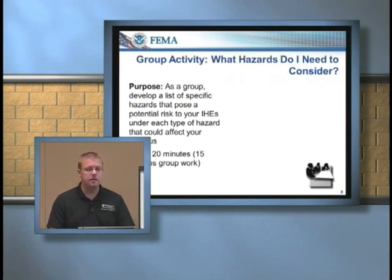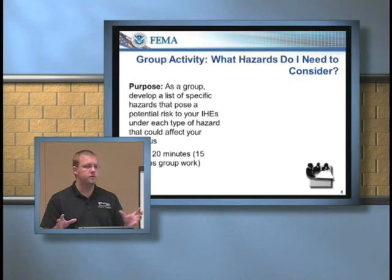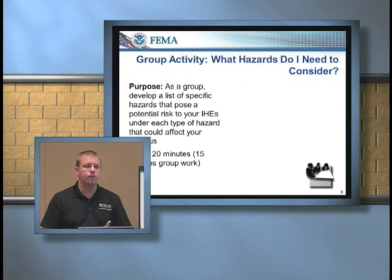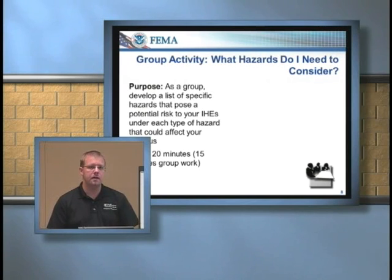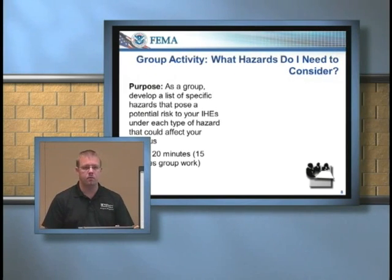All right, so now we're going to do a group activity. In your small groups, using your flip charts, you're going to go through and come up with at least five natural hazards, three human cause, and three technological hazards. Put those on your flip charts, and then we'll talk about those in a few minutes.